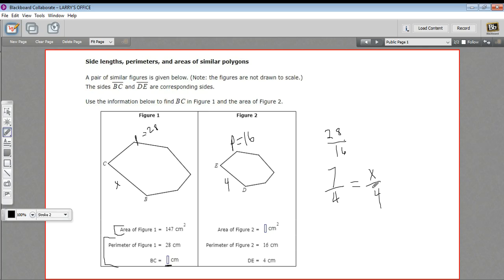If we solve this, 7 times 4 is 28. And then 4 times X is 4X. And we divide by 4. You may have done this in your head already. And you get X equals 7.